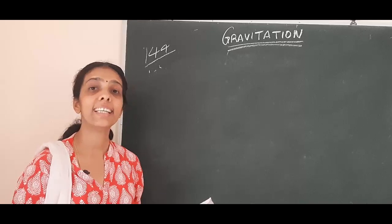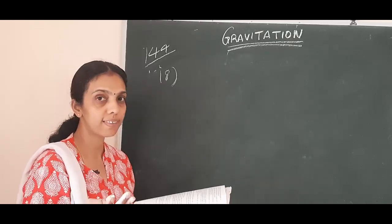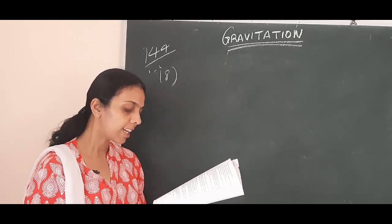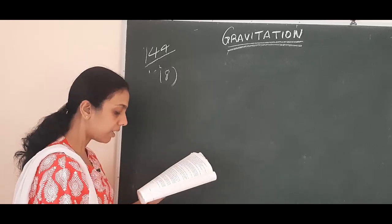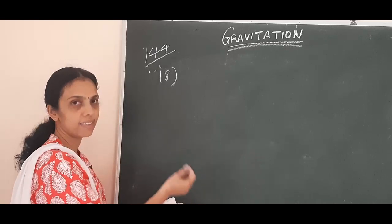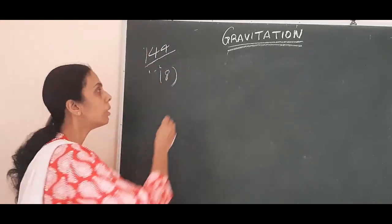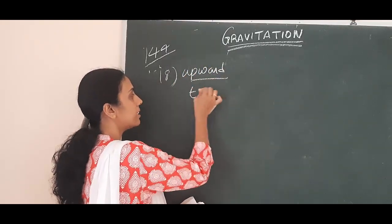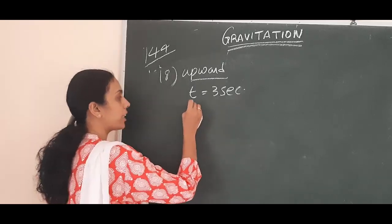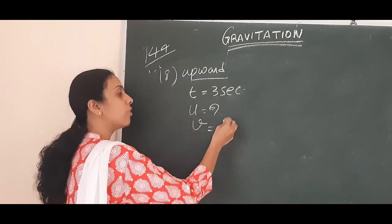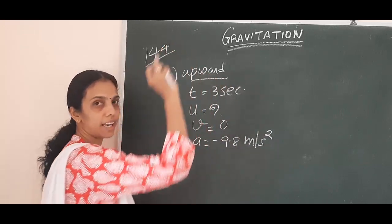Next is question 18. A ball thrown up vertically returns to the thrower after six seconds. Find the velocity with which it was thrown up, the maximum height it reaches, and the position after four seconds. Since total time is six seconds, it takes three seconds to go up and three seconds to come down. For upward direction: final velocity V is 0, acceleration is minus 9.8 meter per second square, and time is 3 seconds.